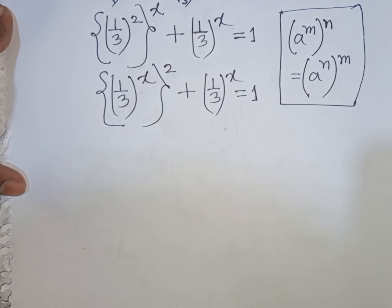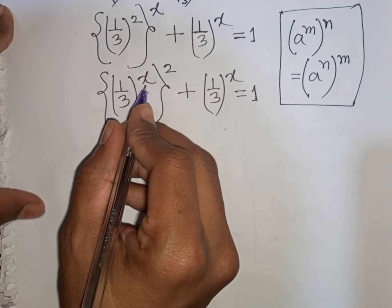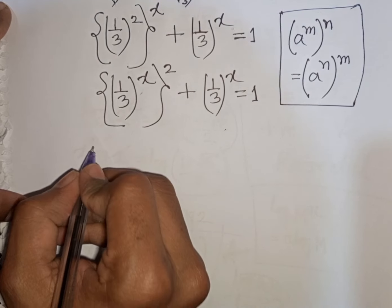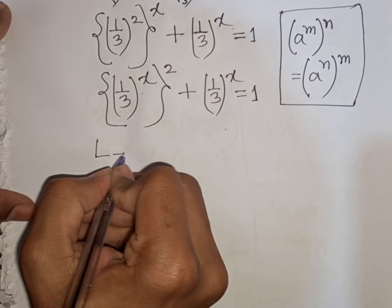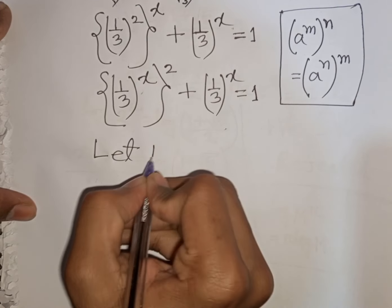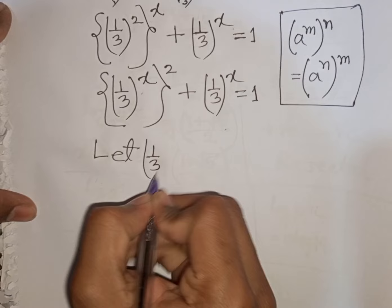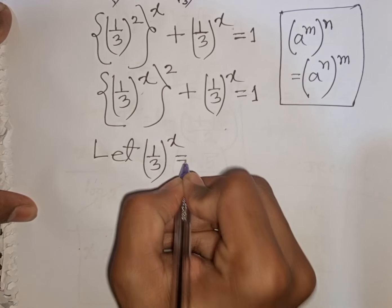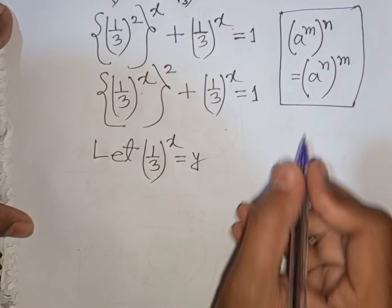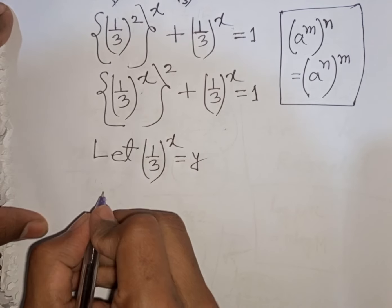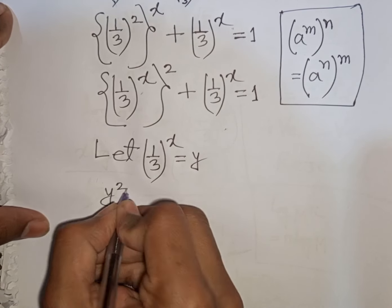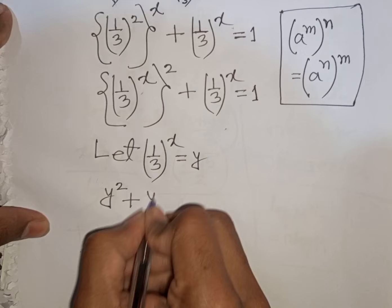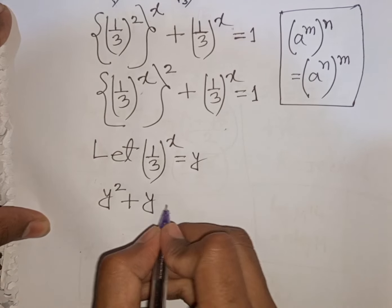We notice (1/3)^x appears in both terms. Let y = (1/3)^x. Substituting, our equation becomes y² + y = 1.